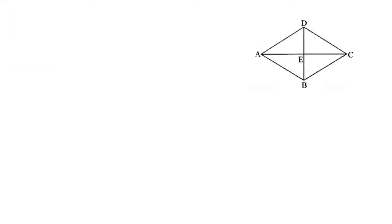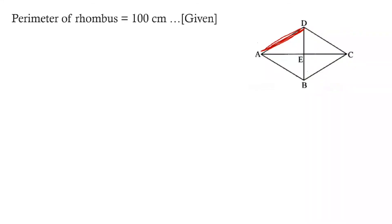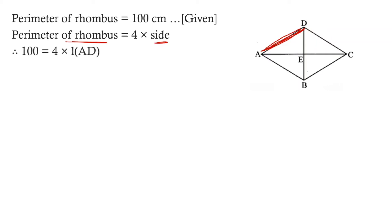Now we find the length of the side of the rhombus. The perimeter is given as 100 centimeters, and since perimeter equals 4 into side, we write 100 equals 4 into AD. So AD equals 100 upon 4, which is 25 centimeters.